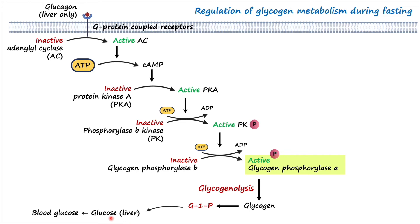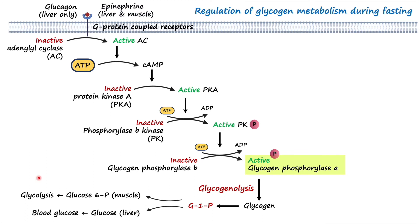In muscle, glucose-1-phosphate is converted into glucose-6-phosphate, which then enters the glycolysis pathway to synthesize energy in the form of ATP. There is also another hormone called epinephrine, released by the adrenal glands during periods of stress, which also promotes the degradation of glycogen both in liver and muscle tissue via a signaling cascade identical to that of glucagon.